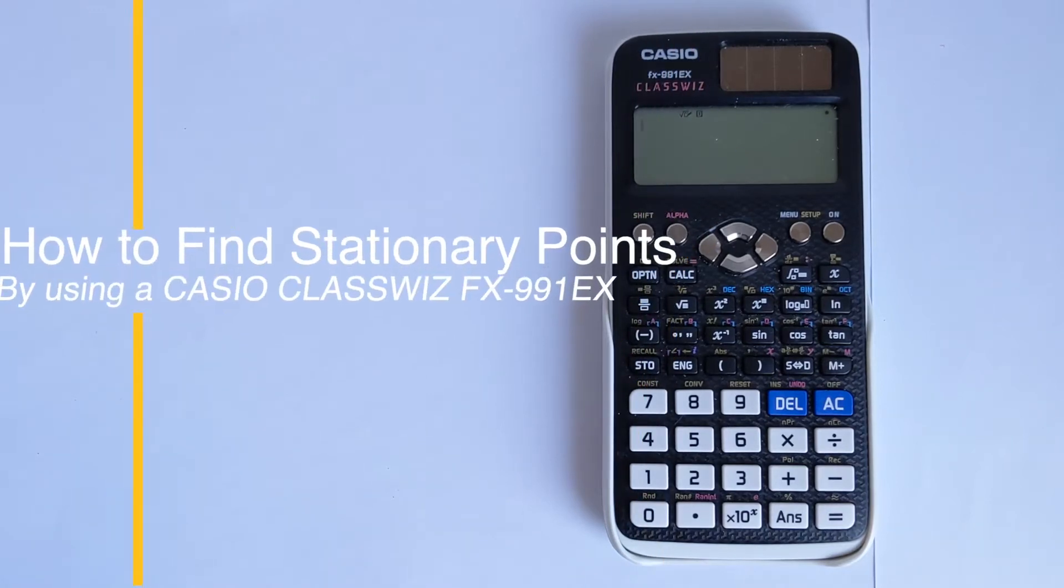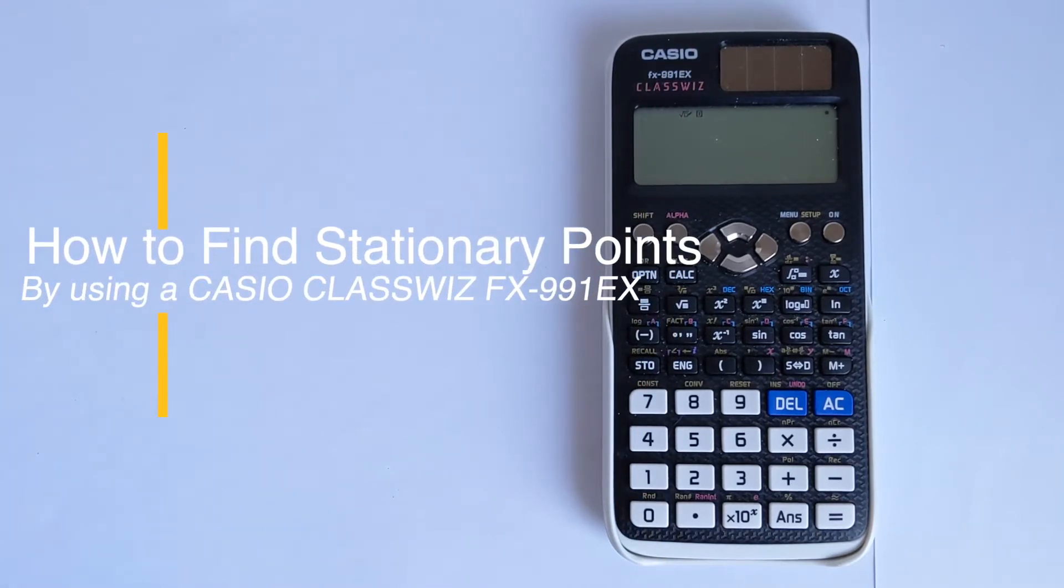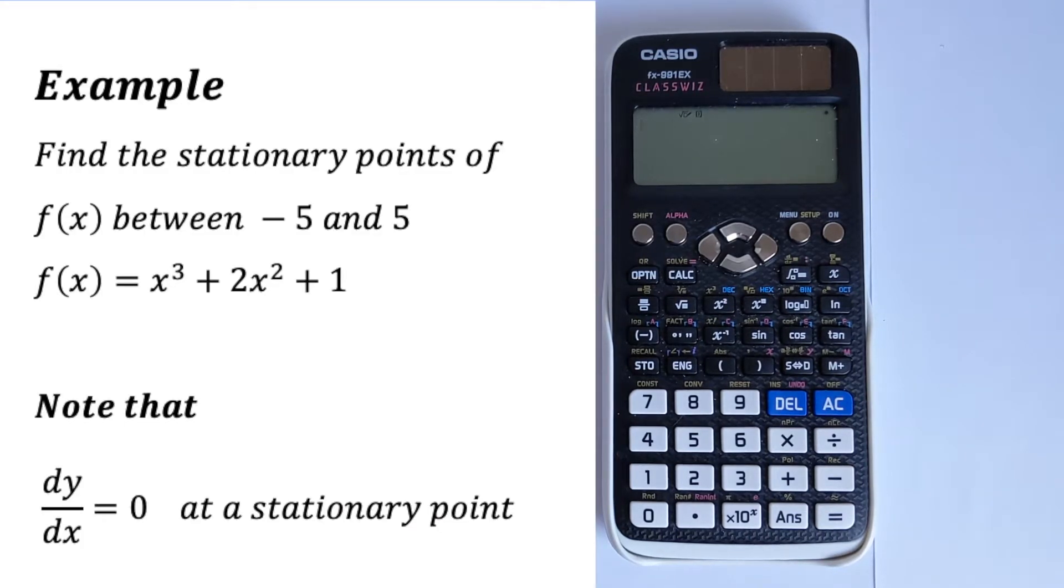In this video, I'm going to show you a trick that you can use in your Casio ClassWiz calculator to figure out the stationary points of a function iteratively. And so to do this, we're going to look at a worked example.